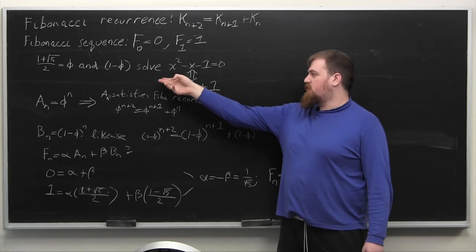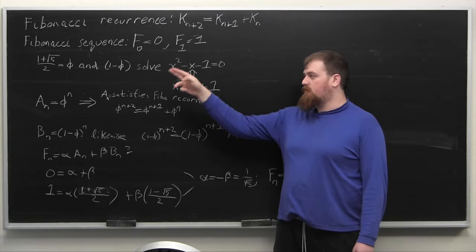Phi and 1 minus phi are solutions to x squared minus x minus 1 equals 0, where phi is 1 plus root 5 over 2.